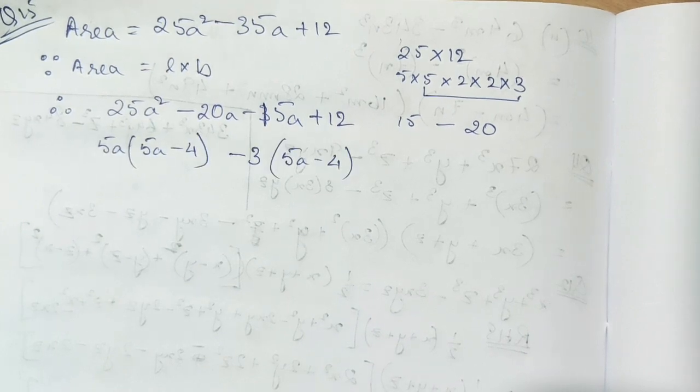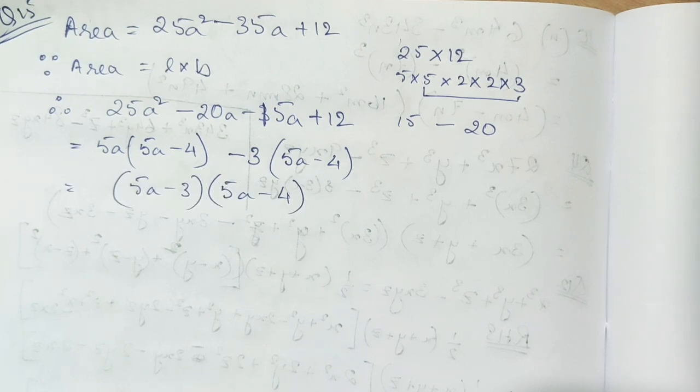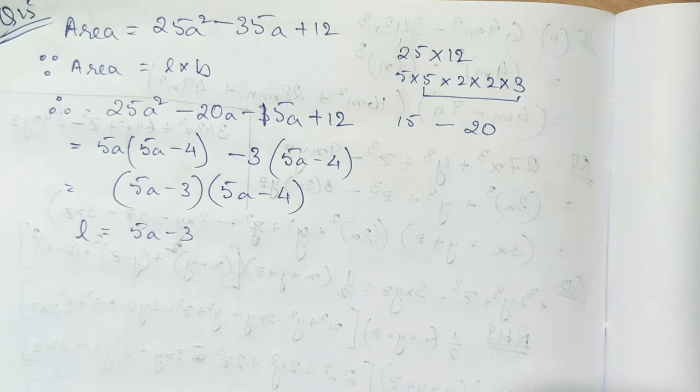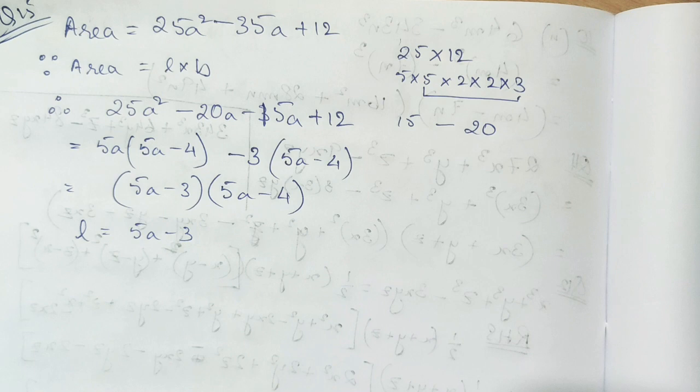Now taking common and writing the common part here, this is the required answer. So these are the length and the breadth. It is not defined which is the length and which is breadth actually, but still we usually take the length to be greater than breadth. Therefore this is the required answer.